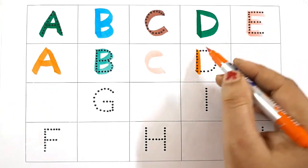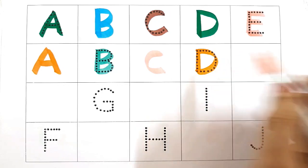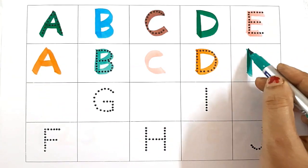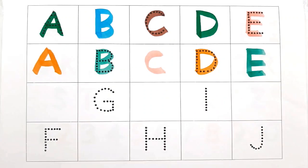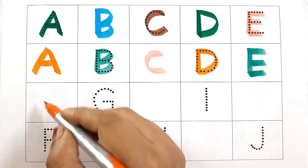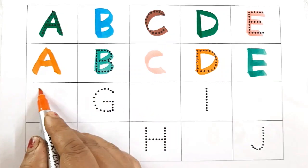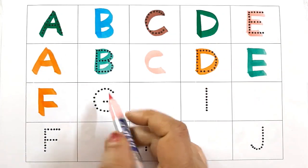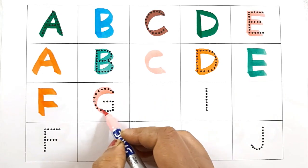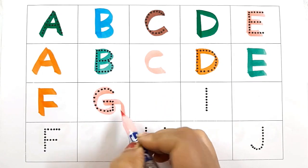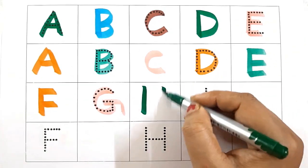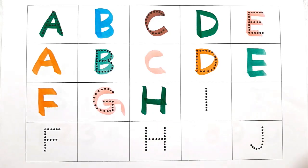D for Door. E for Eye. F for Finger. G for Grapes. H for Horse.